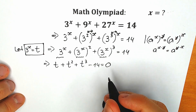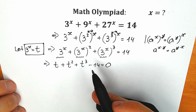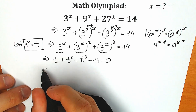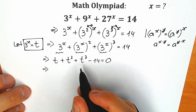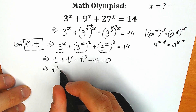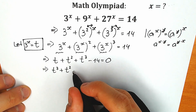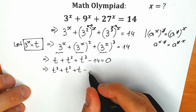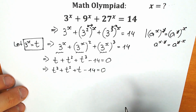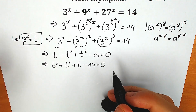Right now it looks like a cubic equation — we have a third power as the highest power. For better understanding, let's reorder: t cubed plus t squared plus t minus 14 equals zero. There are many ways to solve a cubic equation; the first is Cardano's formulas, but that's a long one.